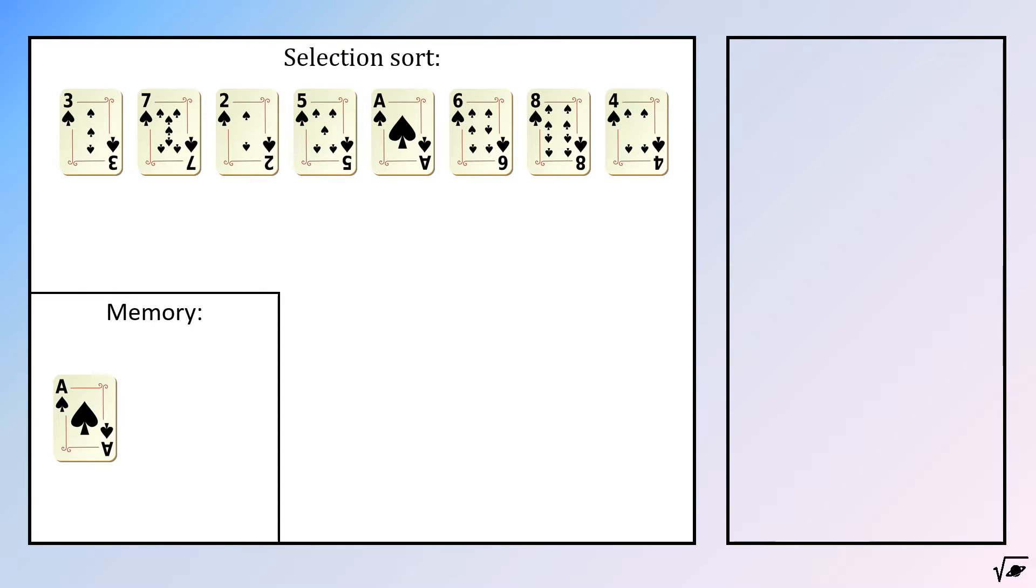When we swap the position of that card with the card in front, a start for our sorted list is created. Now this process has to be repeated a second time. But this time we don't have to evaluate all the numbers since we already know that the first one is placed right.